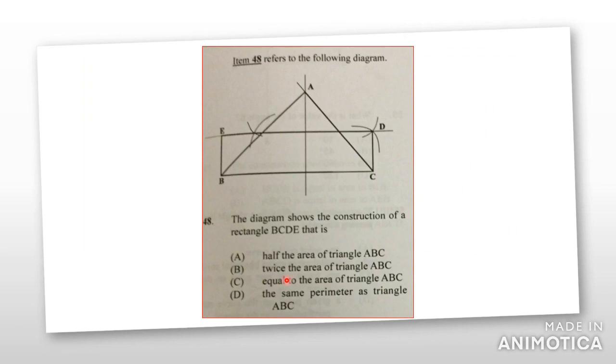The diagram shows the construction of a rectangle B, C, D, E, so you have B, C, D, and E right here. So it's asking,